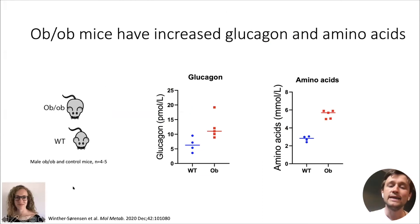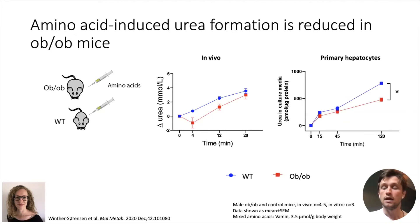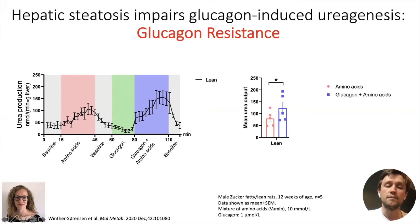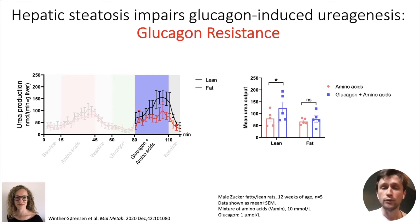The idea is that we have impaired actions of glucagon — you can call it glucagon resistance — a working hypothesis in our lab. This causes decreased ureagenesis, resulting in increased glucagonotropic amino acids, and this is the causation for hyperglucagonemia. Marie measured glucagon and amino acid levels in ob/ob mice, and as expected they are both increased. Also, amino acid-induced ureagenesis is actually reduced, both in vivo and in primary hepatocytes. Using the perfused mouse liver model, healthy mice show an increase in glucagon plus amino acids versus amino acids alone, but if you have hepatic steatosis — in Zucker fatty lean rats — the opposite is observed: glucagon amino acid-driven ureagenesis is reduced. This is what we call glucagon resistance.